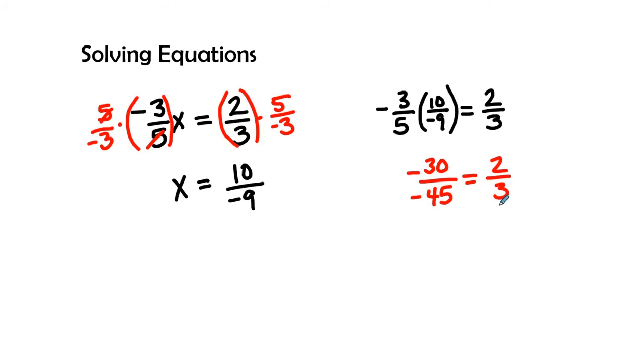I don't know if that seems right, but I know that negative and negative becomes positive, and five goes into both of these. Five goes into thirty six times, and five goes into forty-five nine times. Still doesn't come down to two-thirds, but three goes into each of these. Three goes into six two times, and three goes into nine three times.